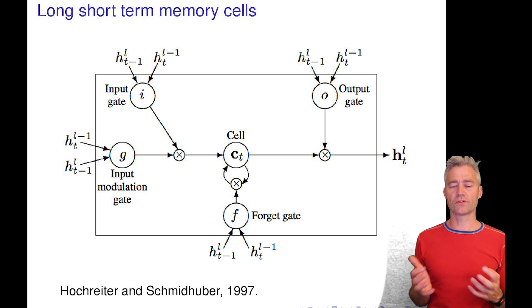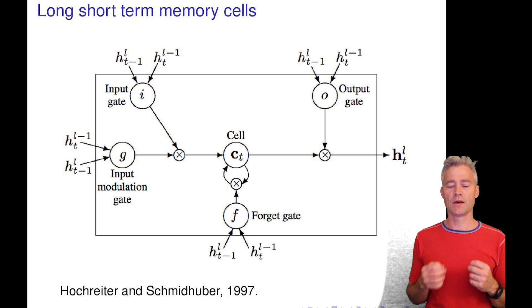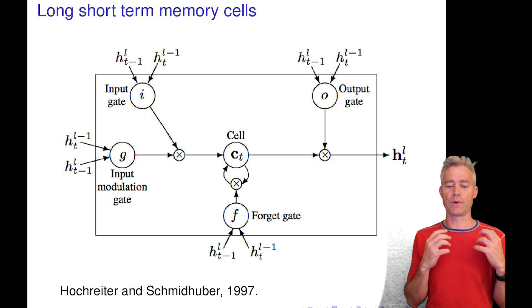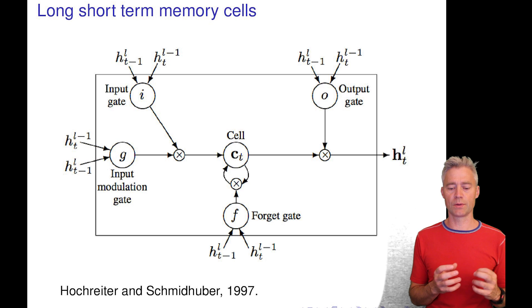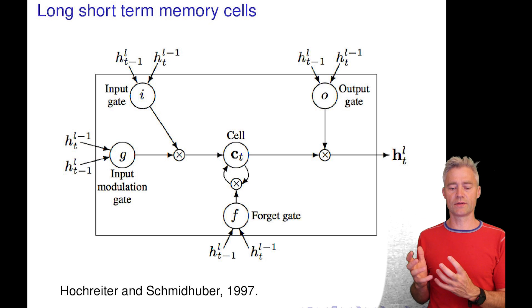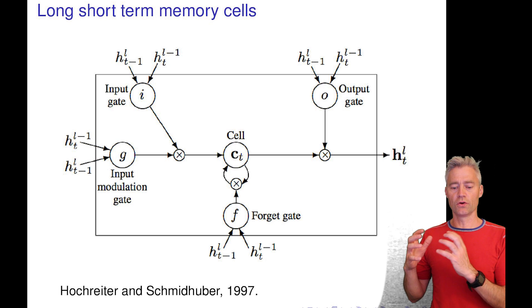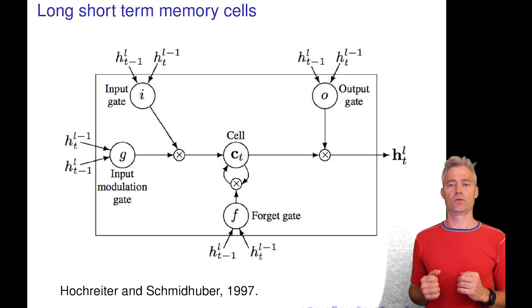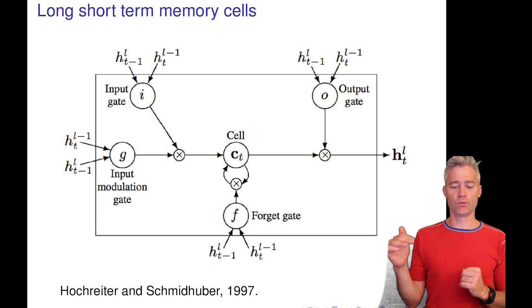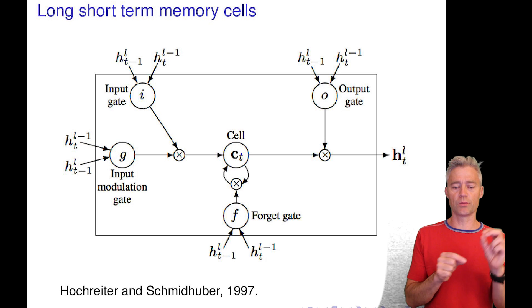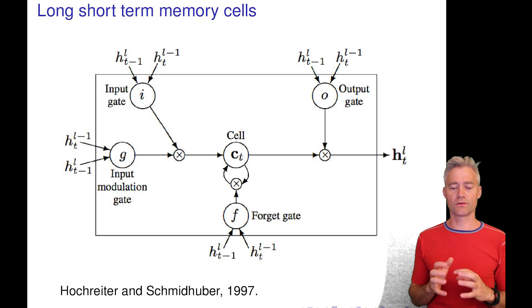What decides when you update? This is decided by the context, and the context is defined by the hidden state at the previous time step and the hidden state at the same time step for the recurrent layer one layer below the layer we are looking at now. So that means how we operate these gates depends on the hidden states.